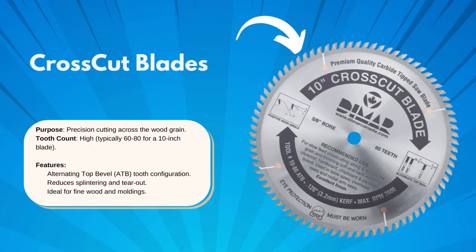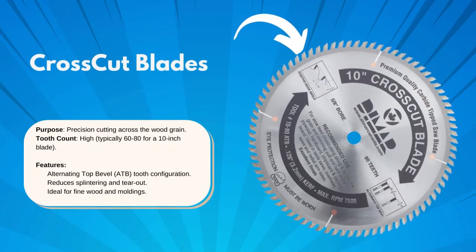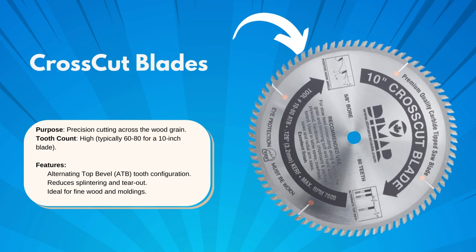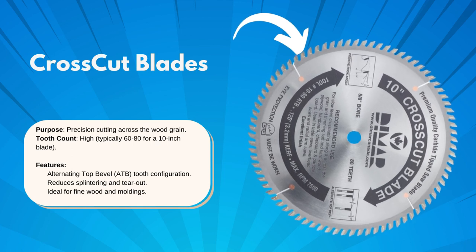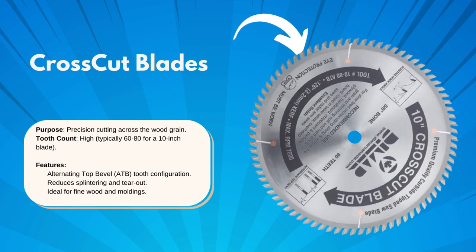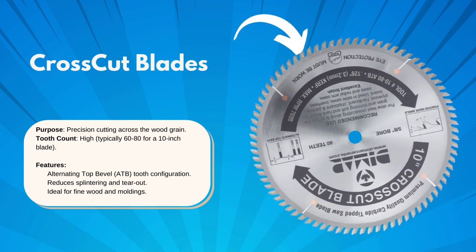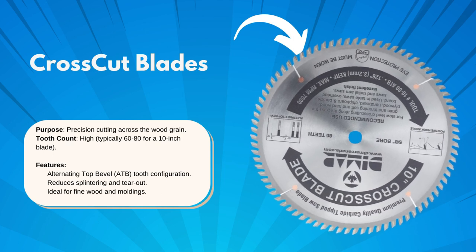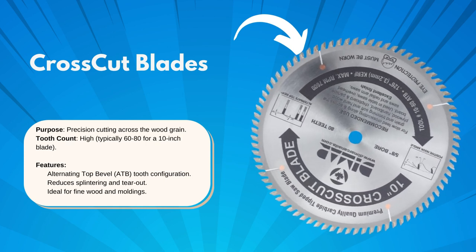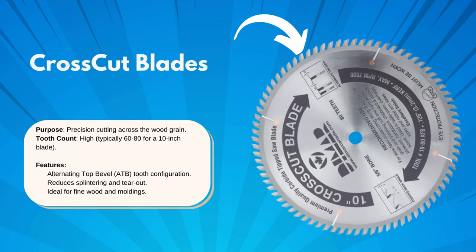First up, the crosscut blade. See those tightly packed teeth? They're designed to give you a clean cut, especially when you're cutting across the grain of the wood. Think of it like a fine-tooth comb — it's all about precision.